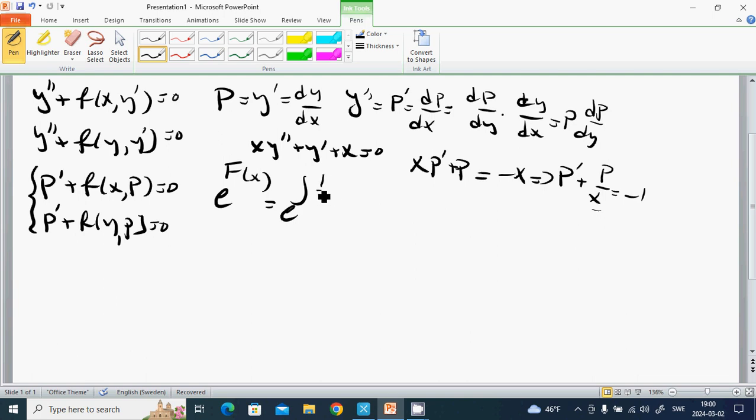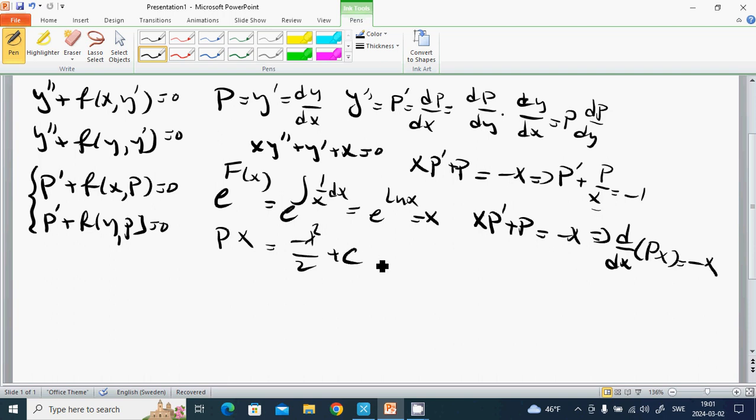And we have e to the power of integral f(x), which equals e to the integral of 1/x dx, which is e^(ln x), which is x. Then we multiply both parts with this and we get x*P' + P = -x, which is d/dx of (P*x) = -x. So P*x = -x²/2 + C.